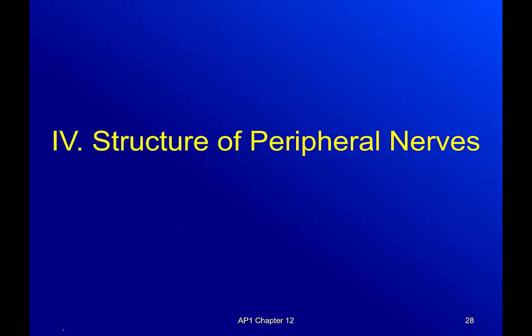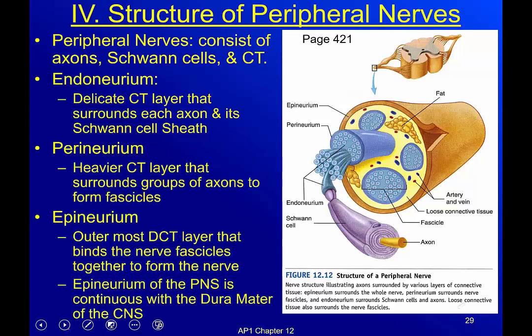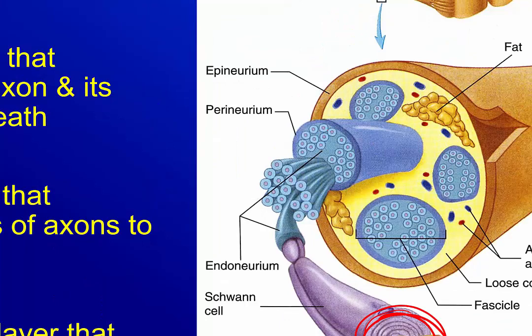We've been talking about the spinal cord. Now we're going to talk about the peripheral nerves — the things coming off of your spinal cord. Your peripheral nerves consist of axons, Schwann cells, and connective tissue. It's not just one neuron. See this? This is one neuron. Do you see how many of these there actually are? This whole thing — with the fat pad, arteries, veins, connective tissue — with the epineurium on the outside, bundles with the perineurium, and the endoneurium surrounding each individual cell — this is a nerve.